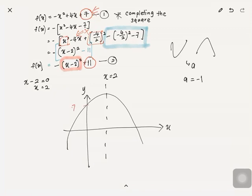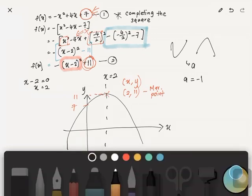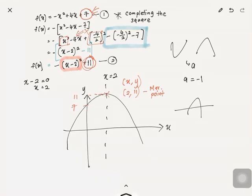The y-intercept is 7. For the maximum point, x is 2 and y comes from the completing-the-square form — the maximum value is 11. Label 11 on the graph with a dotted line. Since it's a grumpy face, the graph will intersect the x-axis at two places. To find those x-intercepts, refer back to the general form.